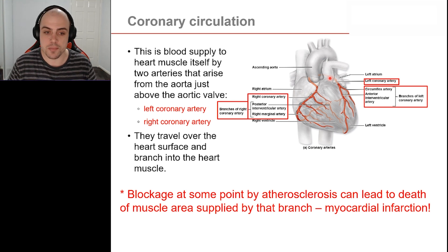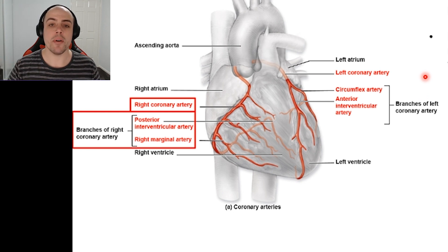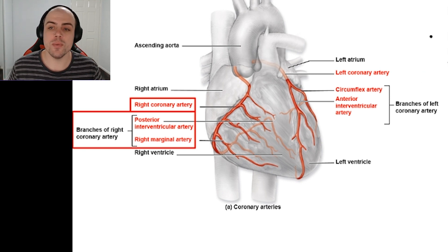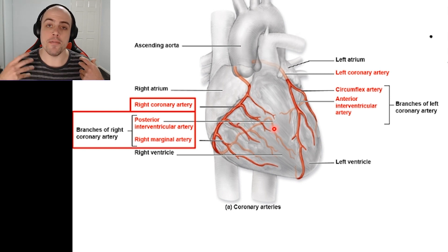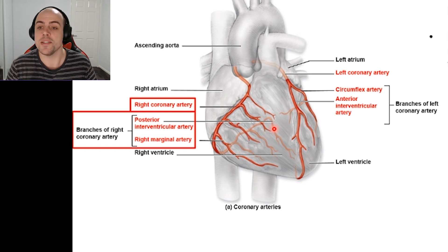Looking at the right hand side first, as we leave the right coronary artery, it is then going to split off into two other arteries. The first one is our posterior interventricular artery, and what this does is feed and supply blood to the right ventricle — specifically the posterior part of the right ventricle.